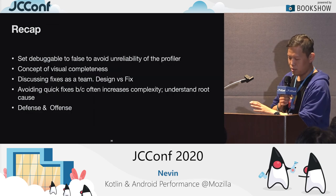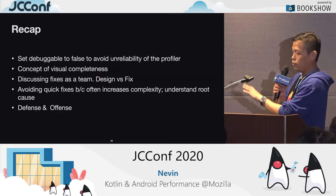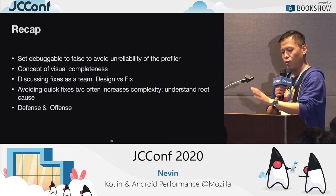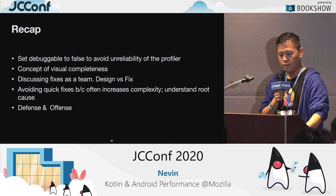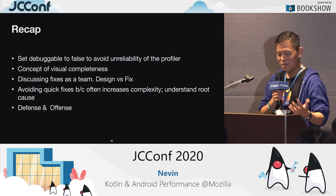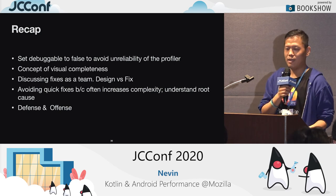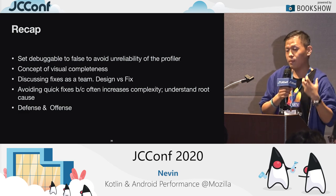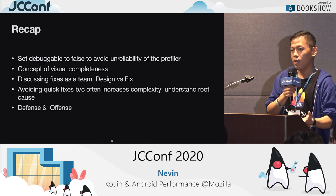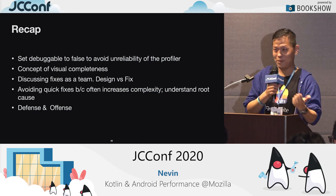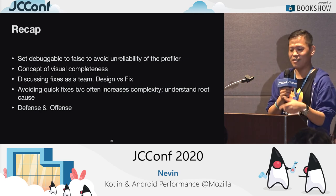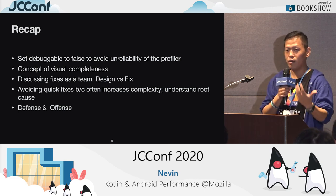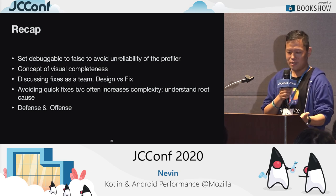Quick recap. First: set debugger to false to avoid unreliable results from the profiler. Second: Visual Completeness Queue — you don't have to do everything before the user sees the first frame. Third: discuss the fix as a team. Sometimes it's by design — you might fix the performance issue but break the design, and the designer might not be happy. When the issue is in other people's code, people might feel they're being blamed. So discuss the fix first to understand the tradeoffs before you start.